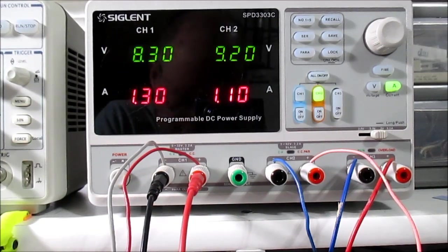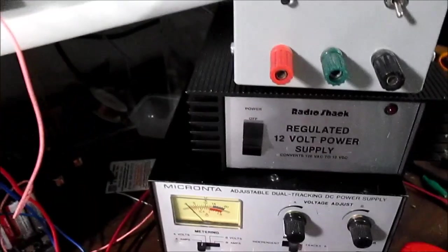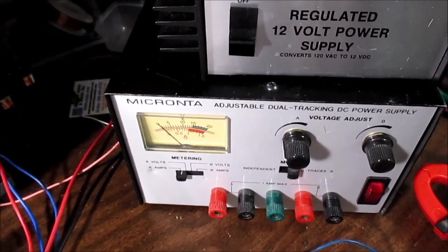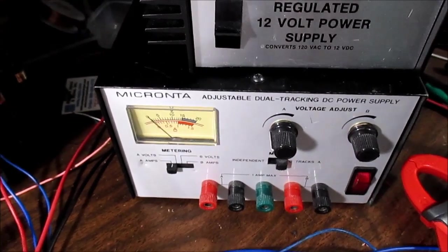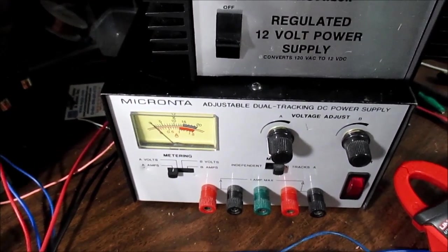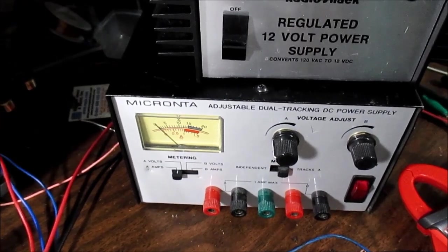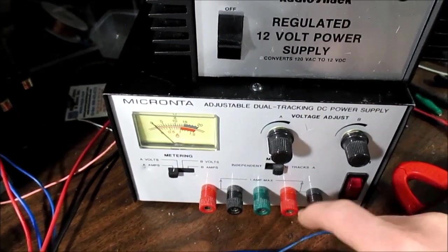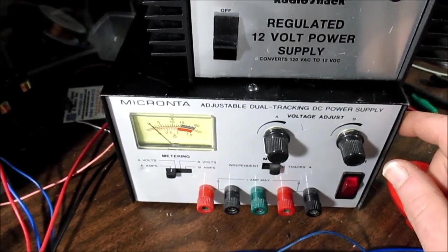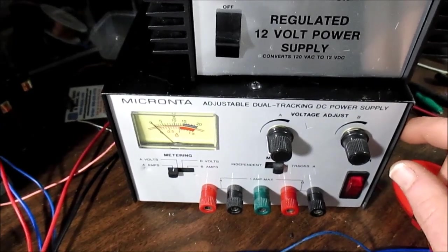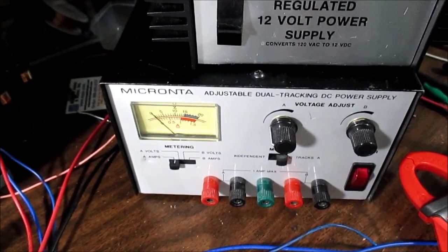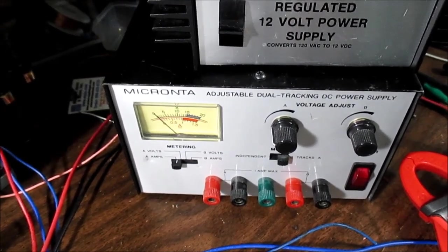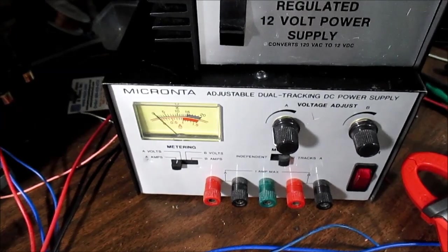So what does this supply replace on my bench? Well, it's going to replace my Radio Shack Micranta Adjustable Dual Tracking DC Power Supply. This has been very reliable. I've had it for 30 years. However, it's limited. It only goes up to 15 volts on each channel. Rated at 1 amp. And as I'm testing amplifiers and things, I often run into problems of not having enough voltage or current available.